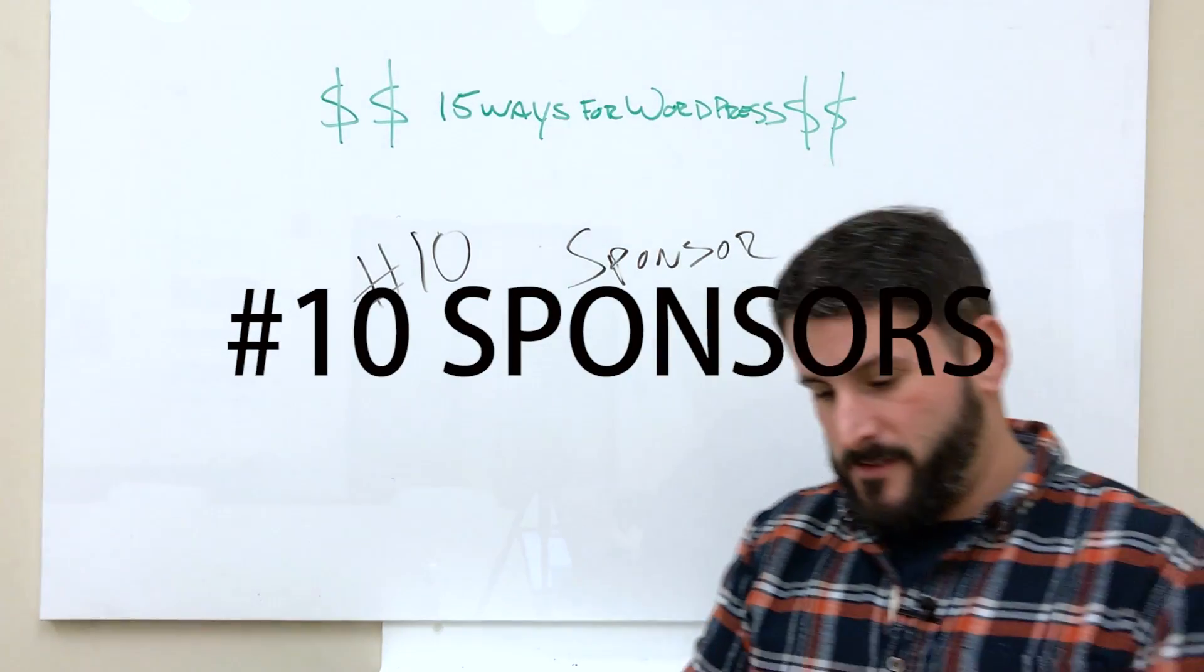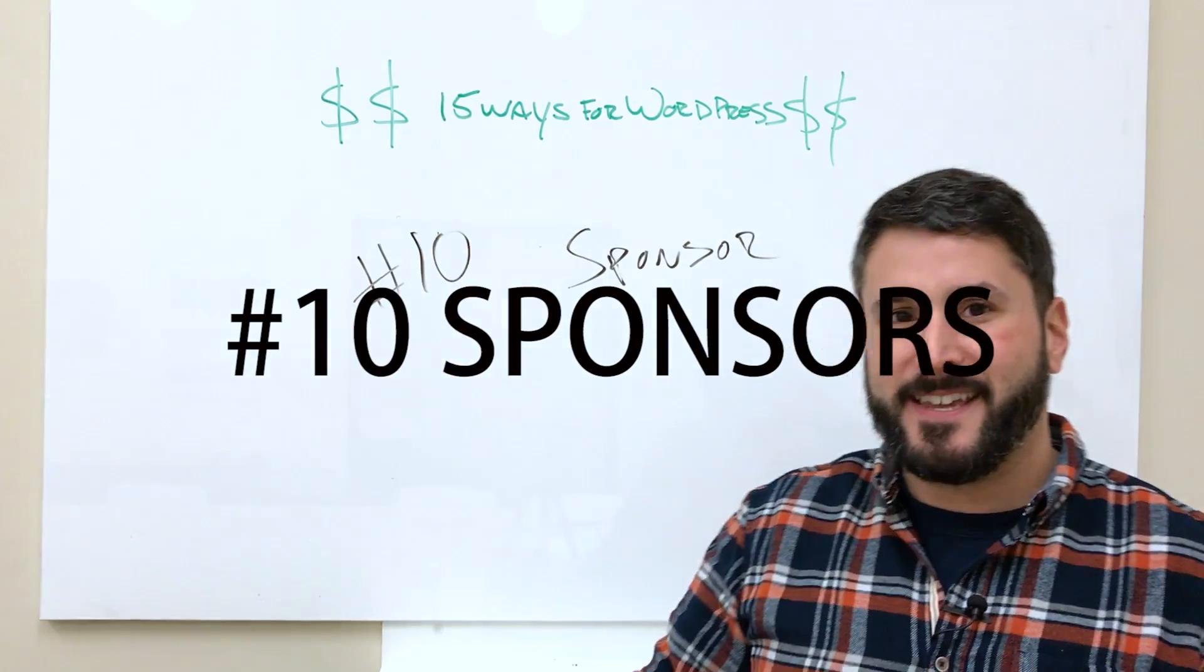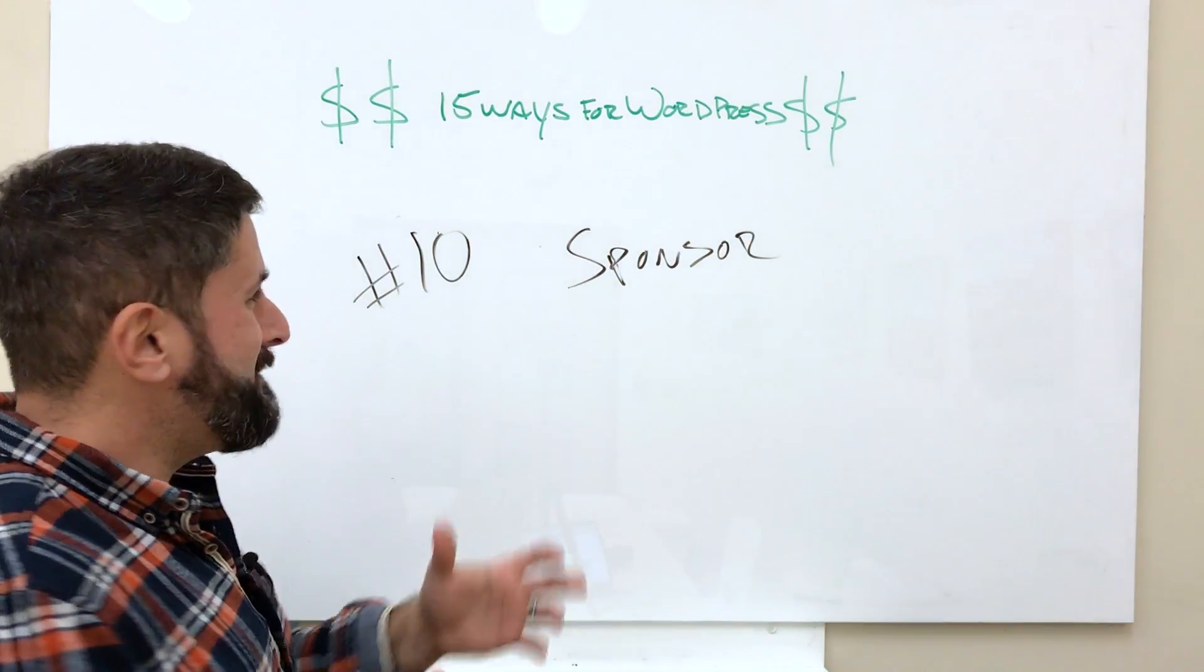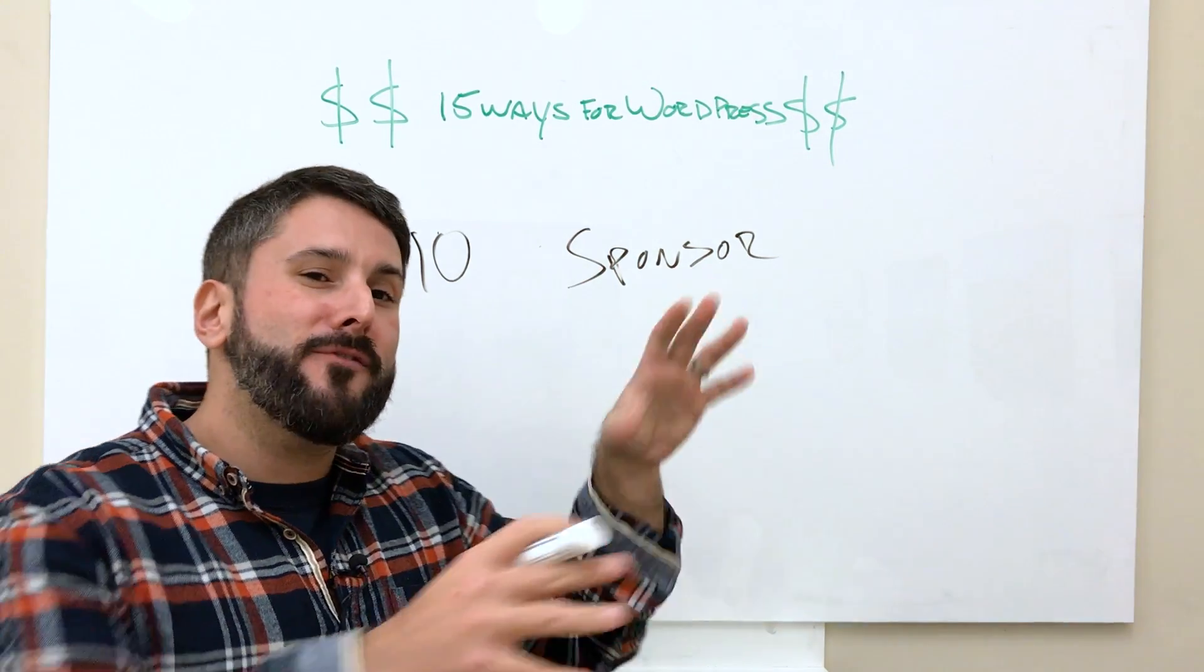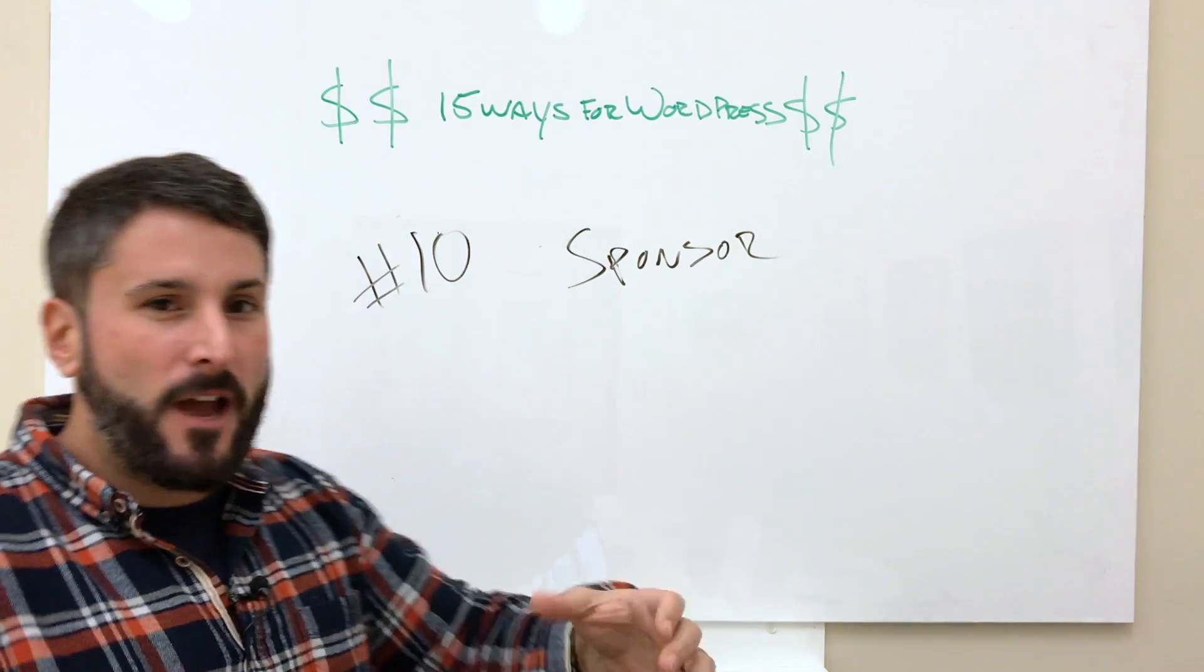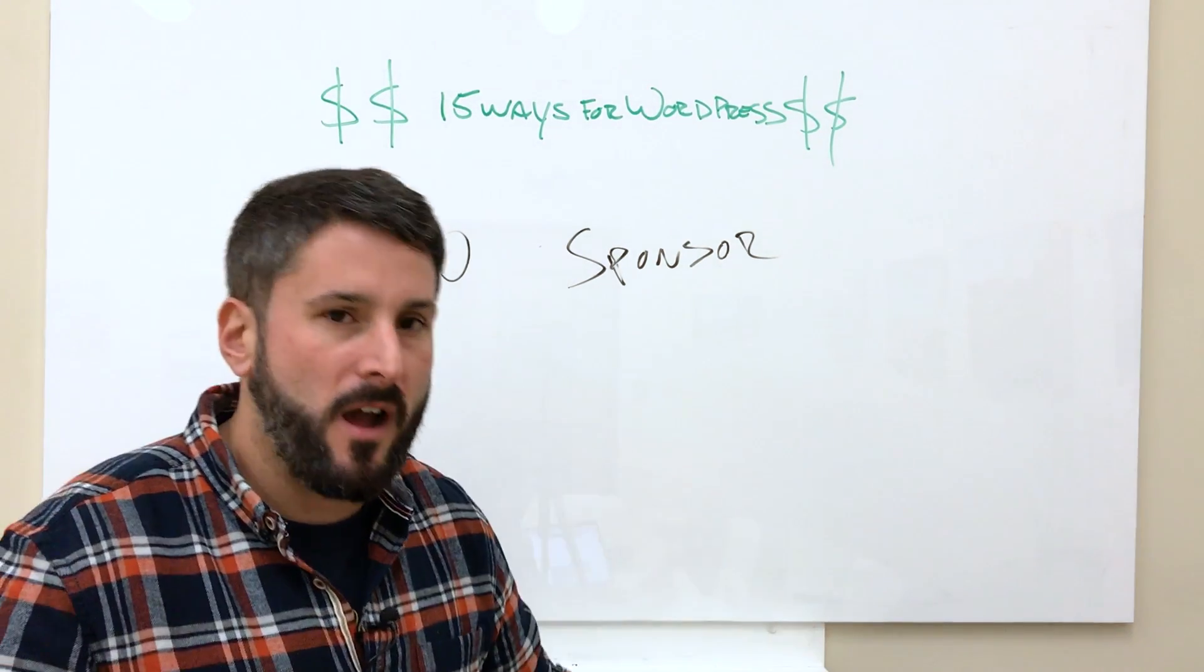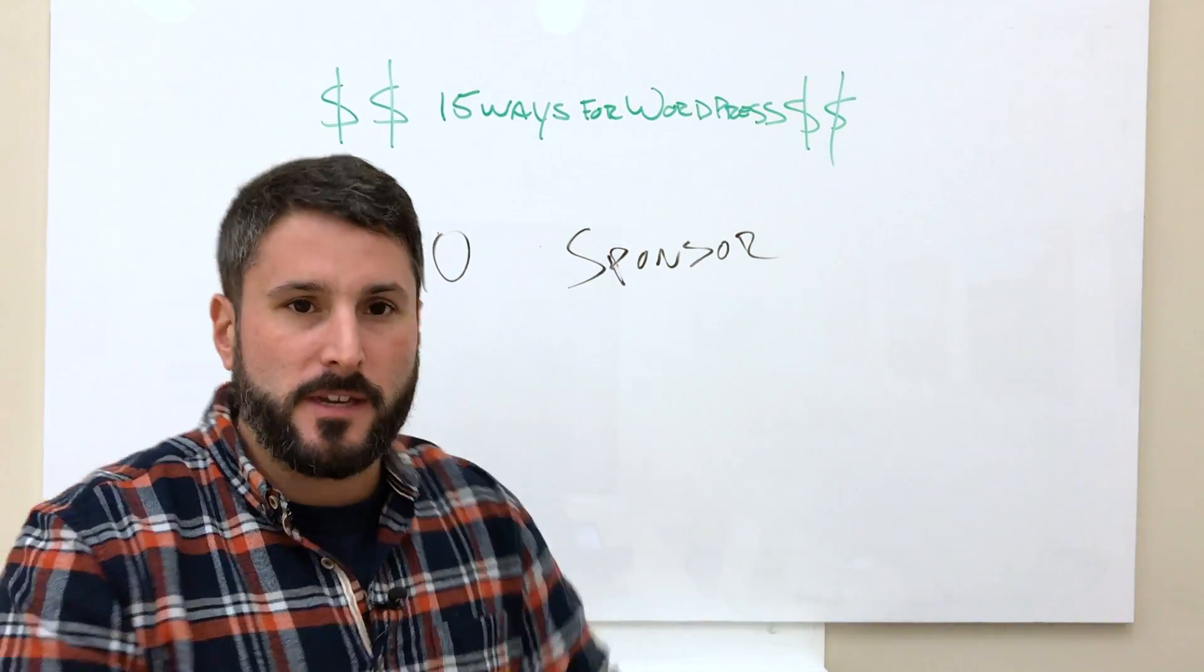Number 10, sponsorship, sponsoring videos and content and podcasts and YouTube channels and blogs and personalities like this show. It's probably the unicorn side of making money with WordPress. It's how I make money with WordPress. I get people to sponsor a podcast. I put out a lot of content. I say this content is brought to you by Pagely, Valet, Restrict Content Pro.